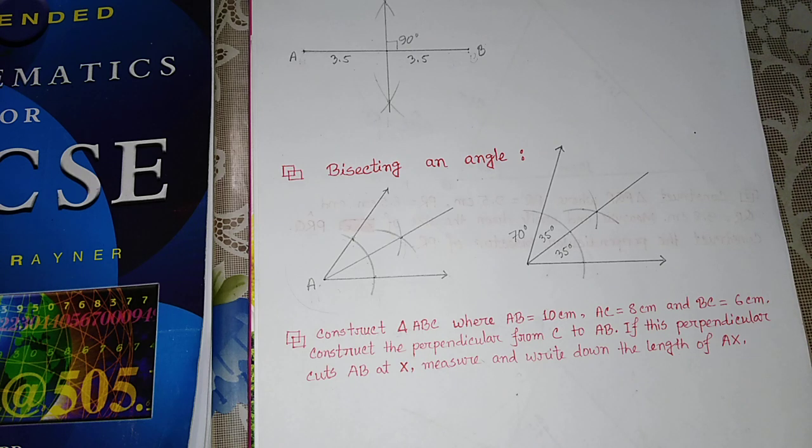If you want to solve this problem, first of all, you need to draw a triangle. We have the information: AB length is 10 cm, AC length is 8 cm, BC length is 6 cm. What do we need to do? We need to draw a perpendicular from C to AB. That means if we draw this line, we will definitely form a 90 degree angle.